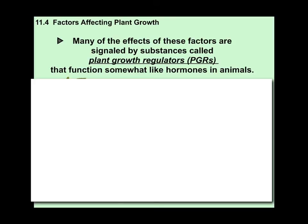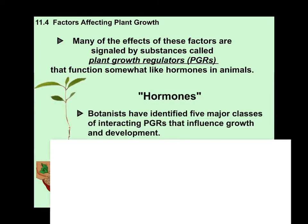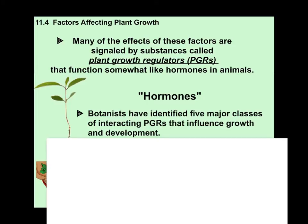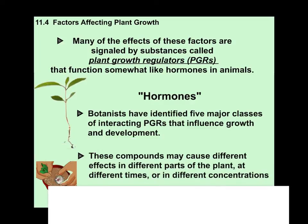Many of the effects of these factors are signaled by PGRs. A hormone in us would be something like testosterone or estrogen — when present, especially during puberty, it helps us grow. Think of how a hormone affects a plant the same way. Botanists have identified five major classes of interacting PGRs that influence growth and development. These compounds may cause different effects in different parts of the plant at different times or in different concentrations.